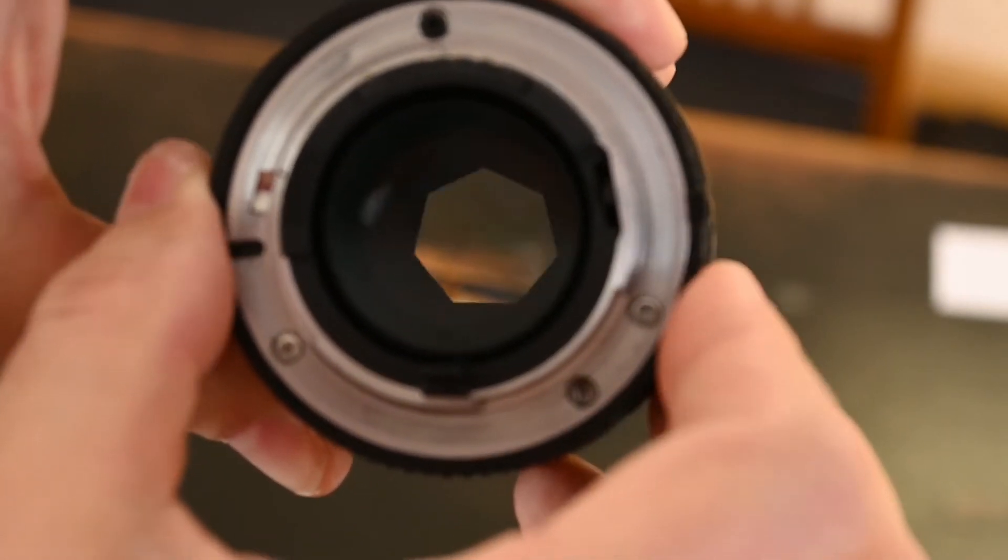So why is it that when an aperture closes down it doesn't crop out the image? It's kind of hard to explain in words so I'm going to draw it out and then I'm going to show you a live demonstration.